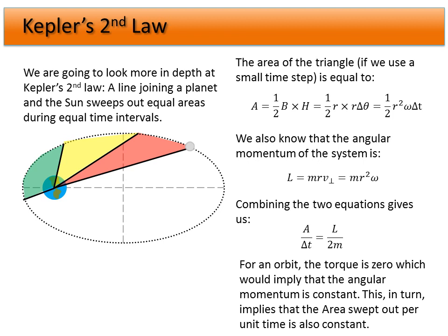For a circular orbit, the torque is zero. We can make a similar argument for elliptical orbits, but for a circular orbit torque equals zero, which implies that the angular momentum is constant. If the torque is zero, then L is constant. Since L is constant and M is constant — our mass hasn't changed — then area over delta t must also be constant. So if we measure equal times, we must get equal areas.